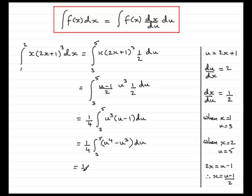And then integrate this. And integrating u to the 4 is obviously going to be u to the 5 over 5. And integrating u cubed with respect to u is going to be u to the 4 over 4. Put our limits in from 3 to 5.